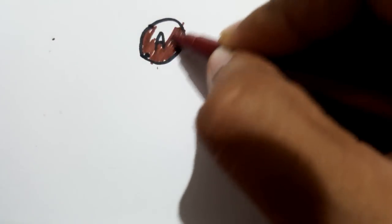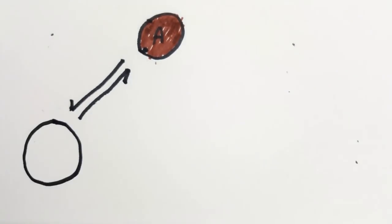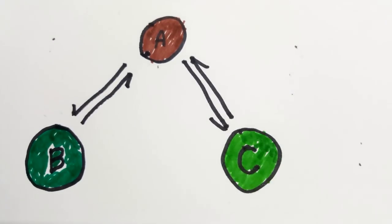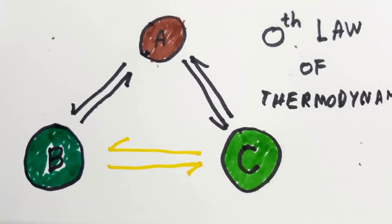When a body A is in thermal equilibrium with a body B and also separately with a body C, then B and C will be in thermal equilibrium with each other. This is the zeroth law of thermodynamics.